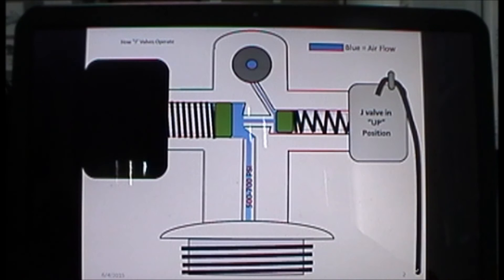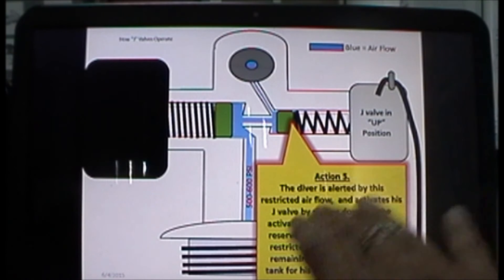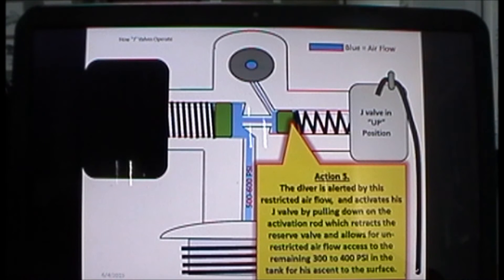In the last slide, we're going to activate the J valve. Fifth action: the diver is alerted because you can feel that restricted flow coming through your regulator mouthpiece. He activates his J valve by pulling down on the activation rod, which retracts the reserve valve and allows unrestricted airflow access to the remaining 300-400 PSI in the tank to be used for his ascent to the surface.